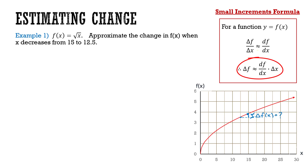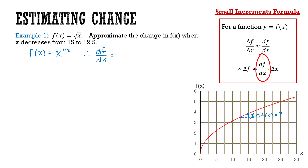We're going to use this relationship to estimate the change that we're going to see in f(x) when x decreases from 15 to 12.5. So first I'm going to need df/dx, our first derivative. Let's remember that f(x) is equal to the square root of x, so that can be rewritten as x to the power of one half. Therefore, df/dx is going to be equal to one half times x to the power of negative one half.